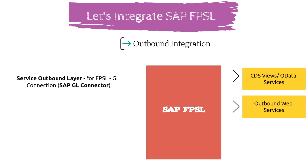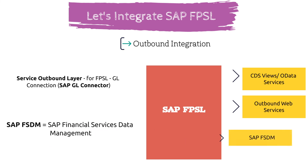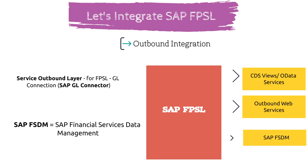The GL Connector basically works using SAP PI, which is an SAP integration tool. For this, SAP has provided inbound web services to pull the data out of FPSL. Lastly, if you have SAP FSDM in place, you can also use FSDM for HANA data federation.